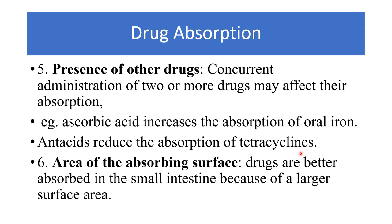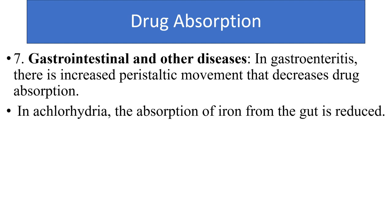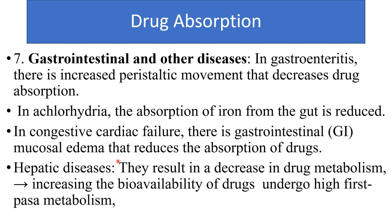Drugs are better absorbed from the intestinal mucosa because of the larger surface area. Regarding gastrointestinal and other diseases that affect bioavailability and absorption: gastroenteritis increases peristaltic movement, which decreases absorption of the drug. In achlorhydria, absorption of iron from the gut is reduced because iron needs an acidic medium for absorption. In congestive heart failure, gastrointestinal mucosal edema occurs, which reduces absorption of the drug.